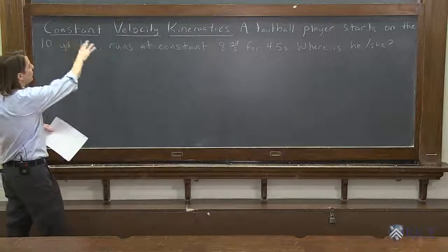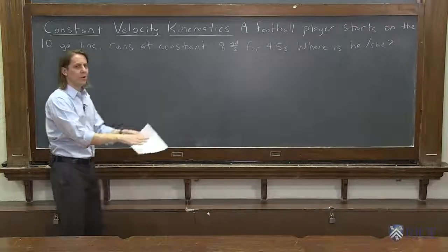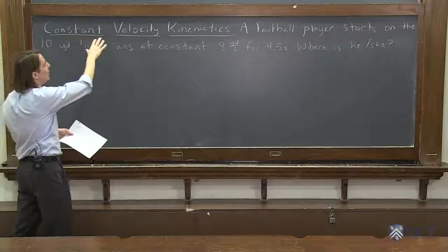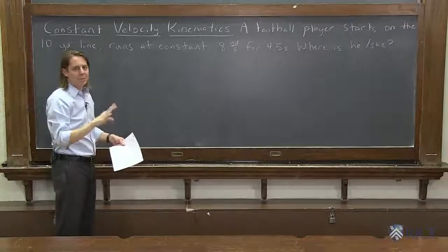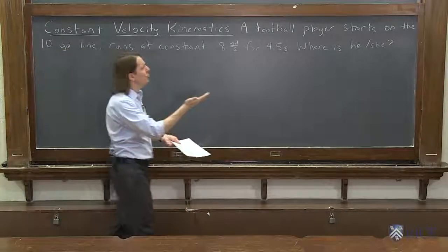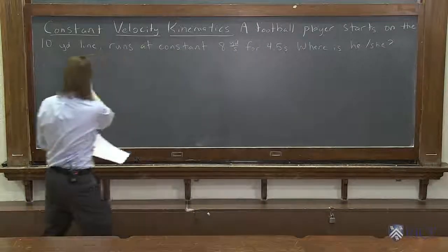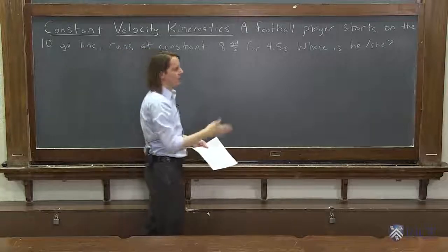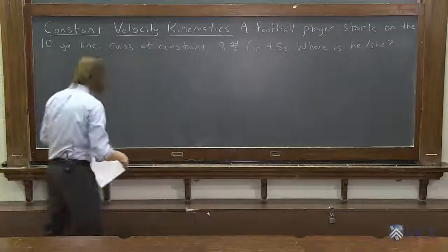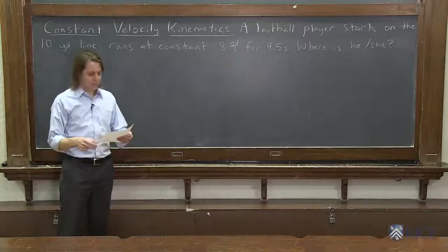And we're only going to do it for, right now, constant velocity. So you do kinematics under different assumptions. Right now we're doing the kinematics assuming that whatever's moving moves at a constant velocity. And I wrote a quick problem here for us to use as we derive things. So a football player starts on the 10-yard line, runs at eight yards per second for four and a half seconds. Where does he or she end up? Which yard line? This is clearly American football.